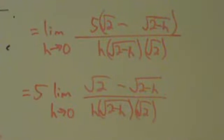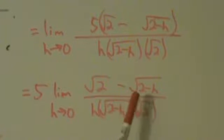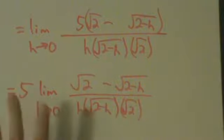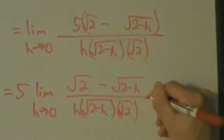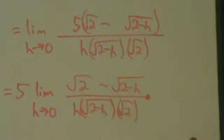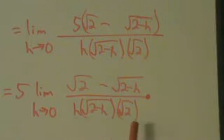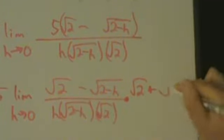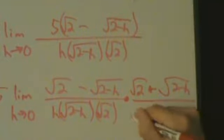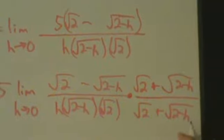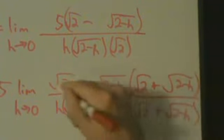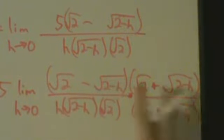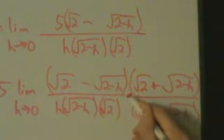Now we've pretty much reduced it to a square root type of function like examples 1 and 2 — square root of something minus square root of something else. So it's like example 2, and we're going to do the same thing. We have a 5 out here, but that's not affecting anything yet — not until the very end. So we're going to multiply the top and the bottom by the conjugate of the top. The bottom is going to get pretty messy, but the idea is to eventually cancel the h, so on the bottom we'll leave everything factored and separate. The conjugate is root 2 plus root 2 minus h, and we have to be very careful with our parentheses — those three sets of parentheses are all necessary.